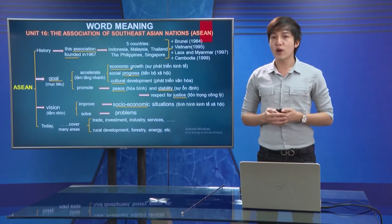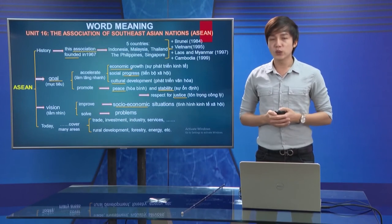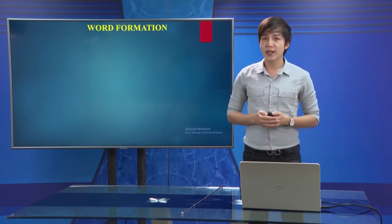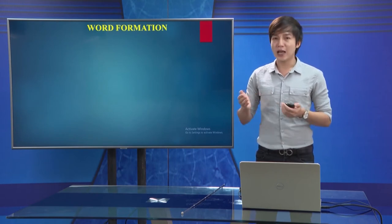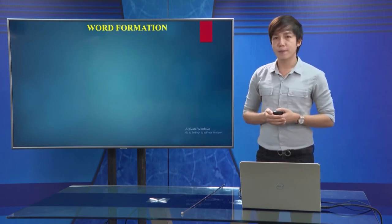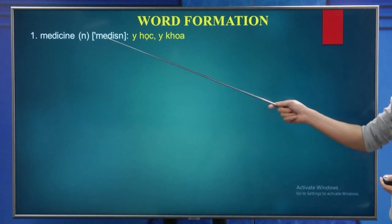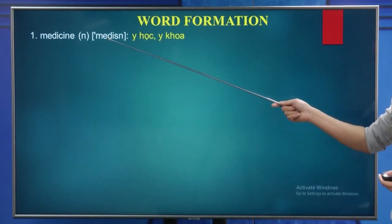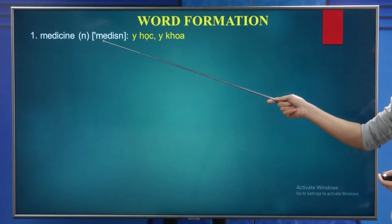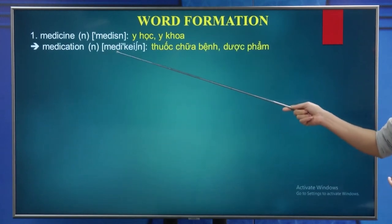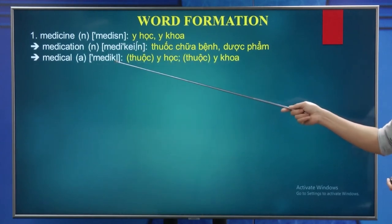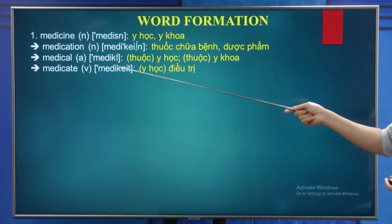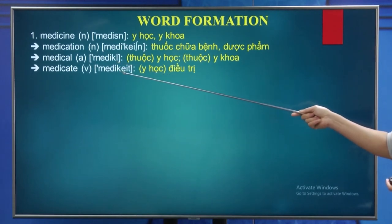Now we move to the second part: word formation. Number 1 - Medicine: the noun is medicine, another noun is medication, the adjective is medical, and the verb is medicate. Number 2 - Economy: the noun is economy, another noun is economics, the adjectives are economical and economic, and the verb is economize.